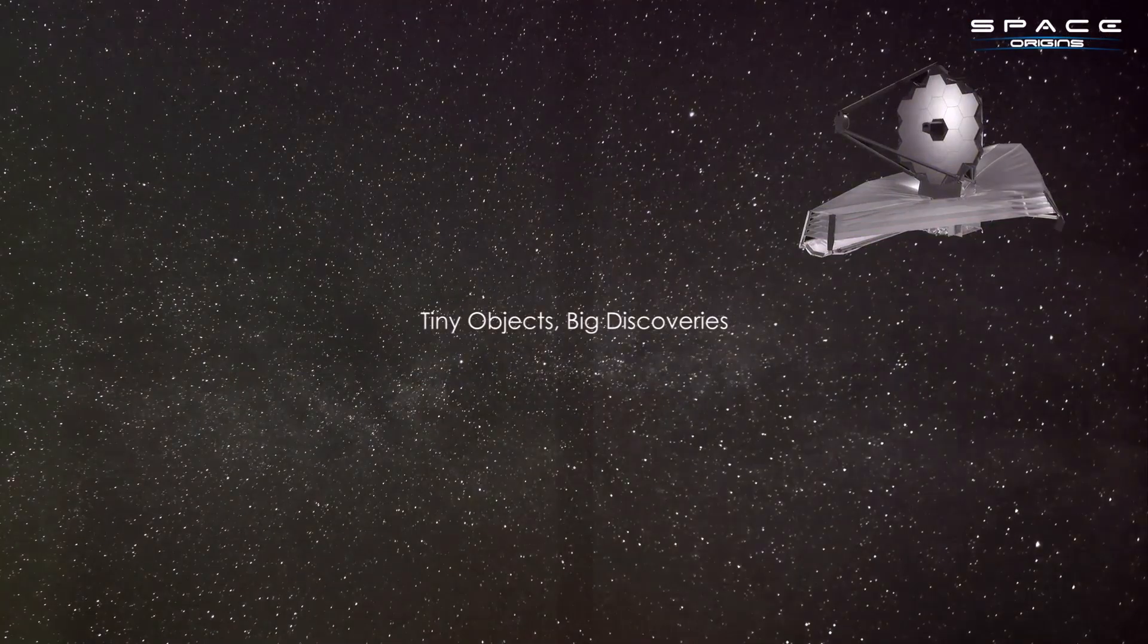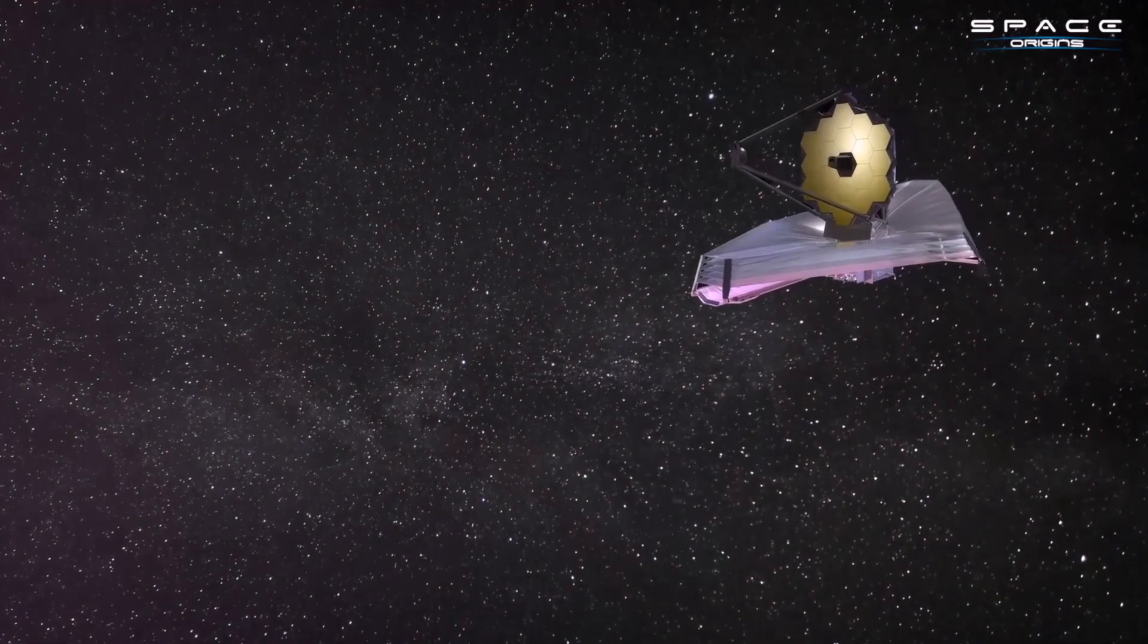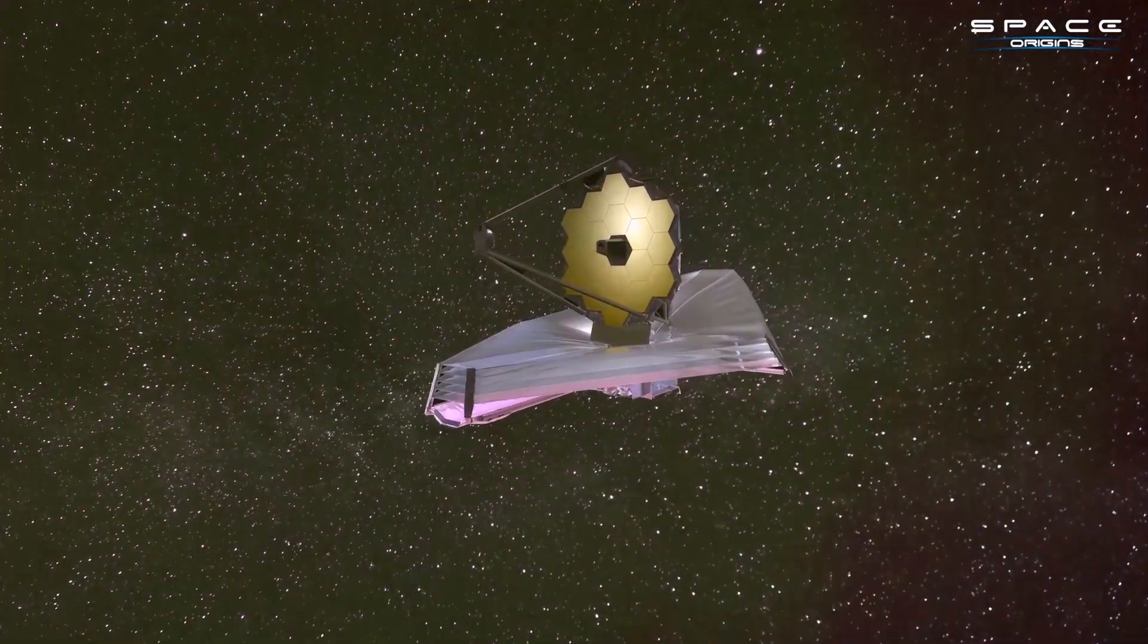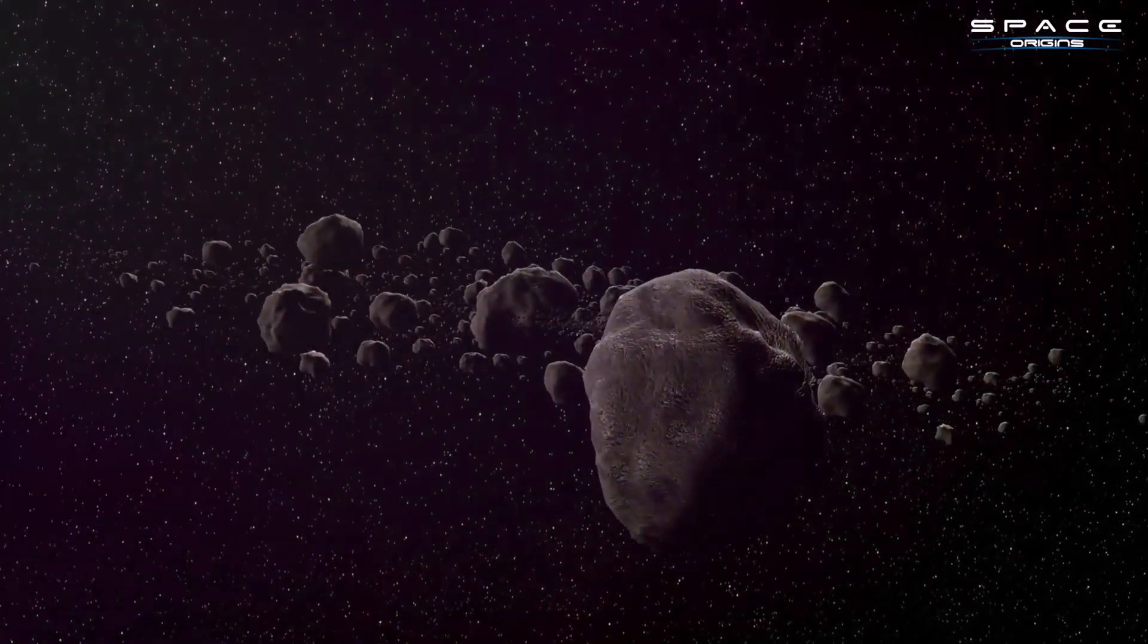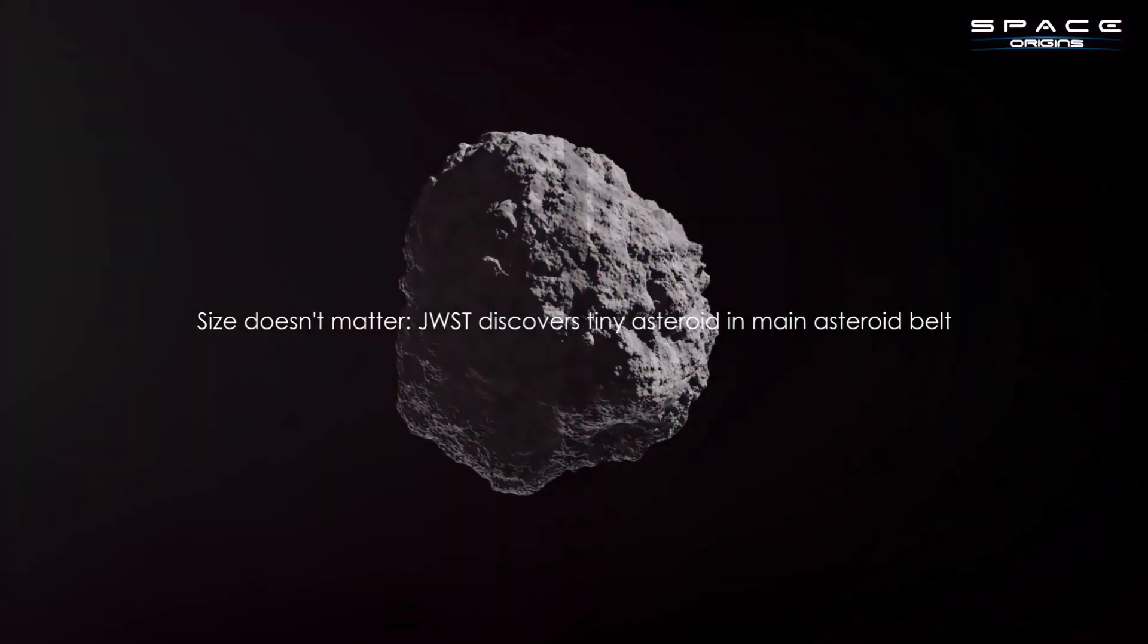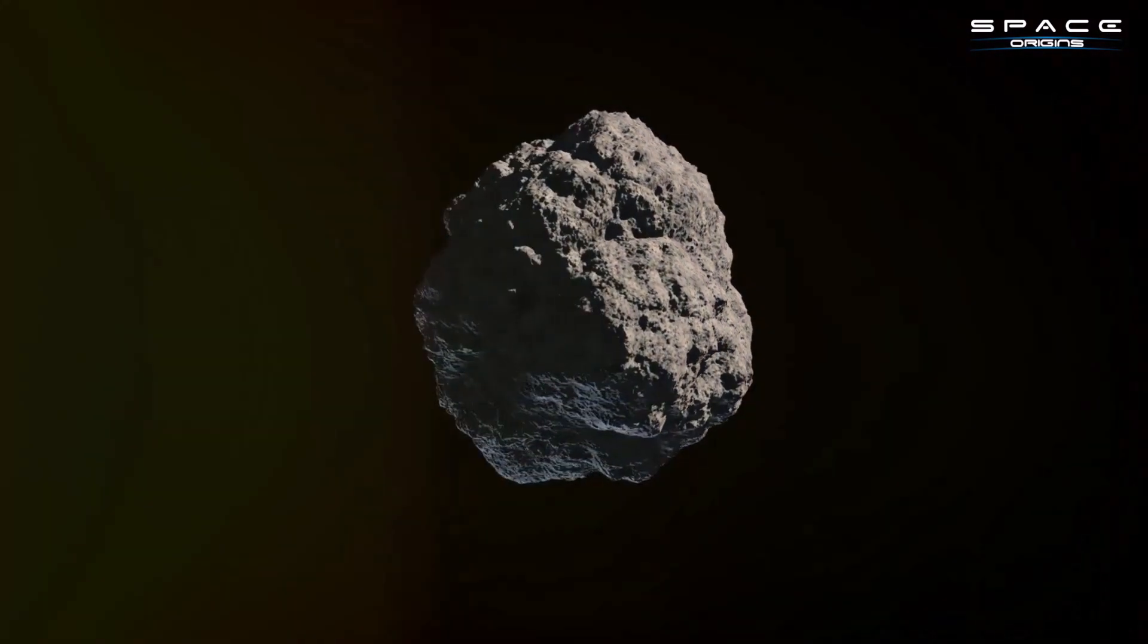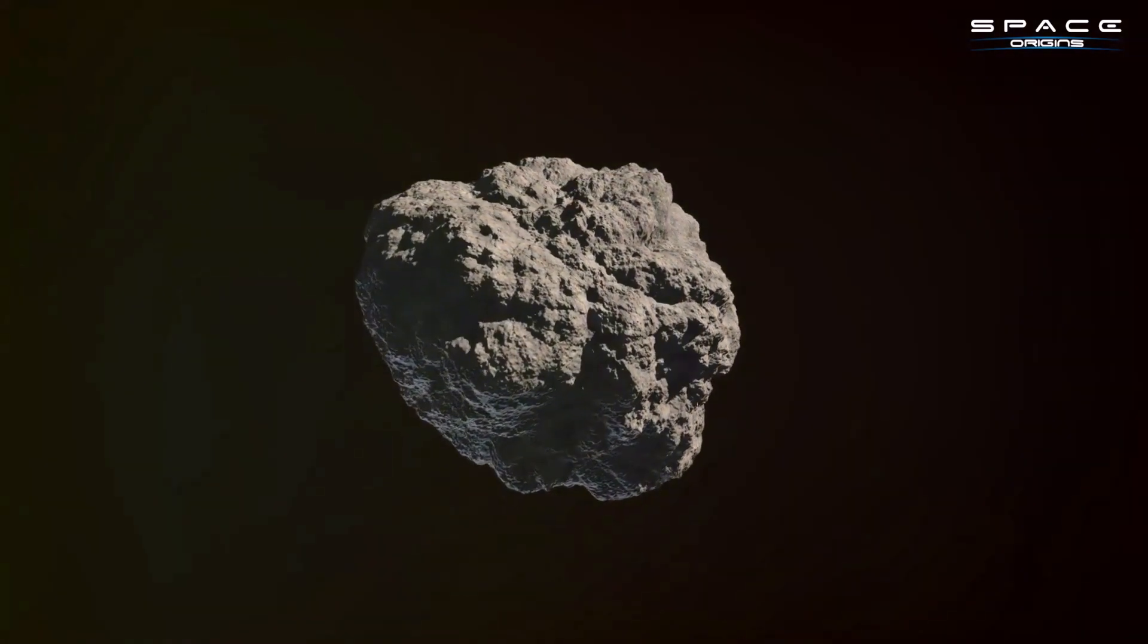For our number 10 finding, size indeed doesn't matter. In 2023, the James Webb Space Telescope demonstrated its keen eye for detail with an unexpected discovery. Nestled in the main asteroid belt, the region of space located between the orbits of Mars and Jupiter, an otherwise inconspicuous asteroid was found. When we think of asteroids, we often imagine colossal bodies, but this one was anything but. Despite its diminutive size, this tiny asteroid caught the attention of the world's most advanced space telescope.